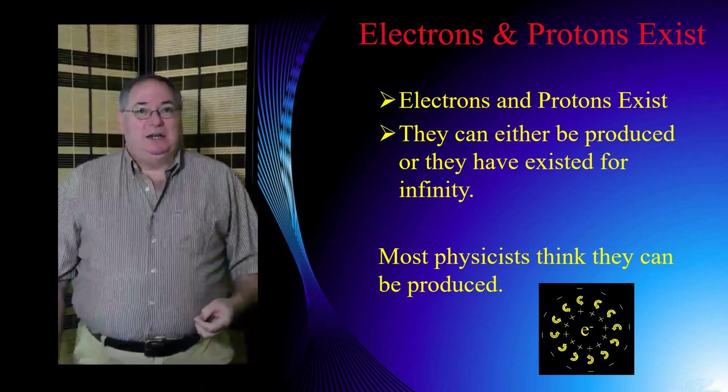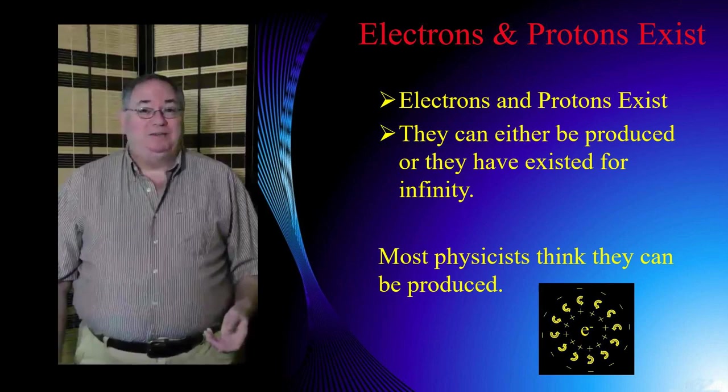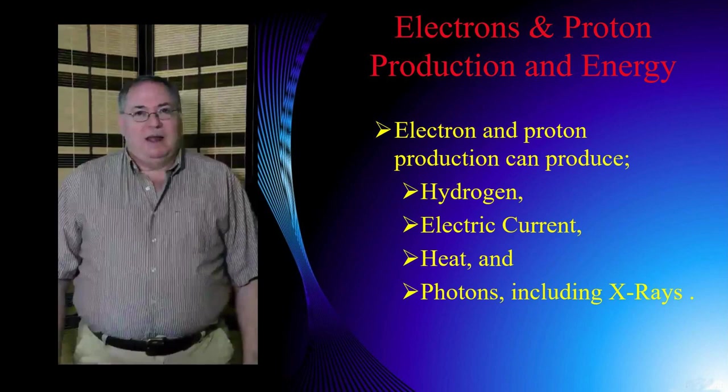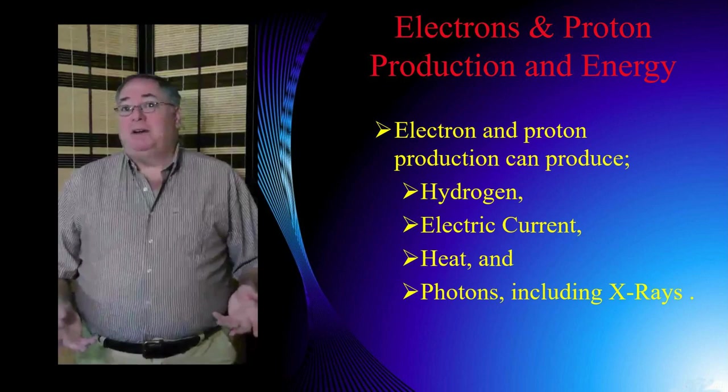Now the first key point is electrons and protons exist. So it means they've either been here forever or they're produced somehow. And most physicists tend to lean toward them being produced somehow. So why aren't we working on that?